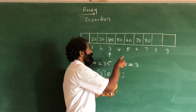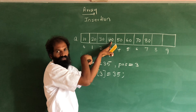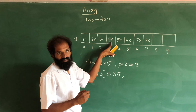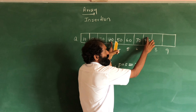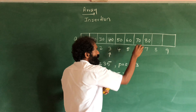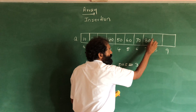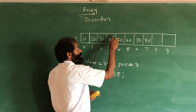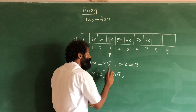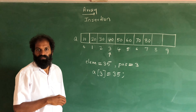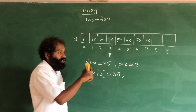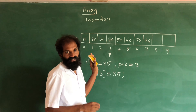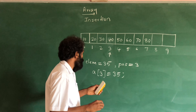The first thing is we need to free this room — we have to make this location free. First we need to shift 80 here, then 70 here, 60 here, 50 here, and 40 to the next position. We have to shift all elements one step towards the right. This is the technique.